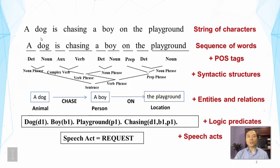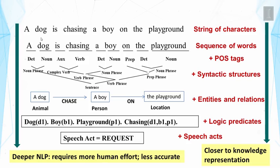This picture shows that if we move down, we generally see more sophisticated natural language processing techniques to be used. Unfortunately, such techniques would require more human effort and they are less accurate.